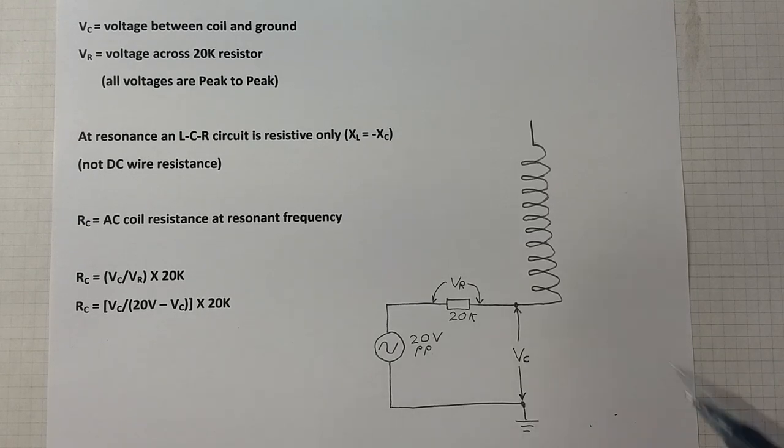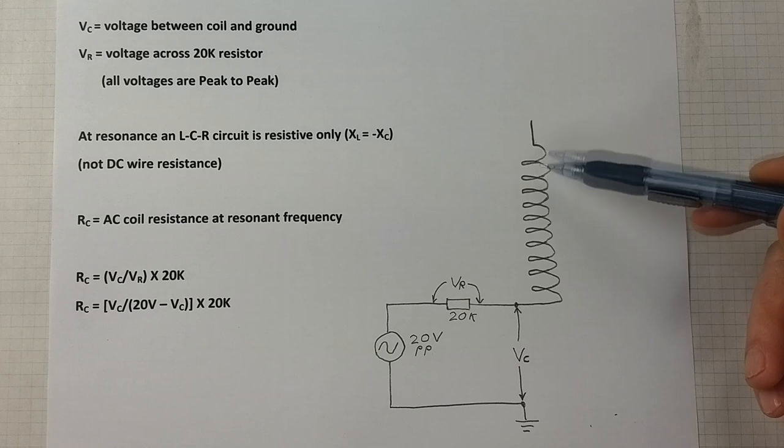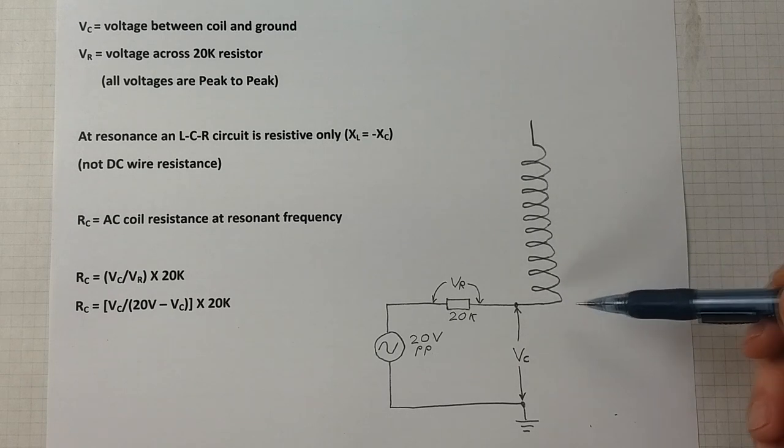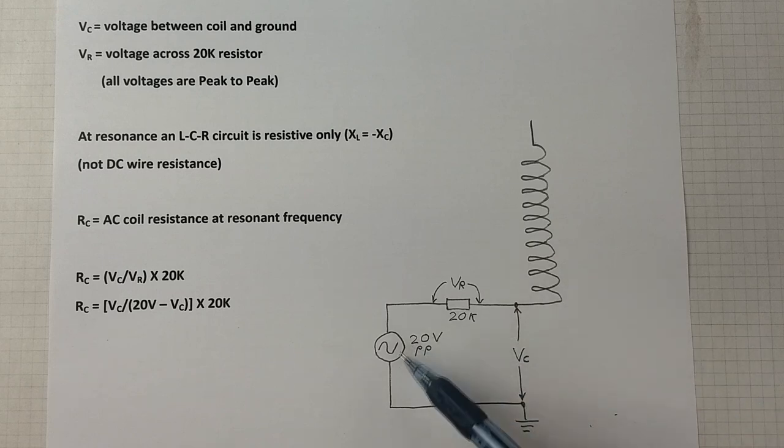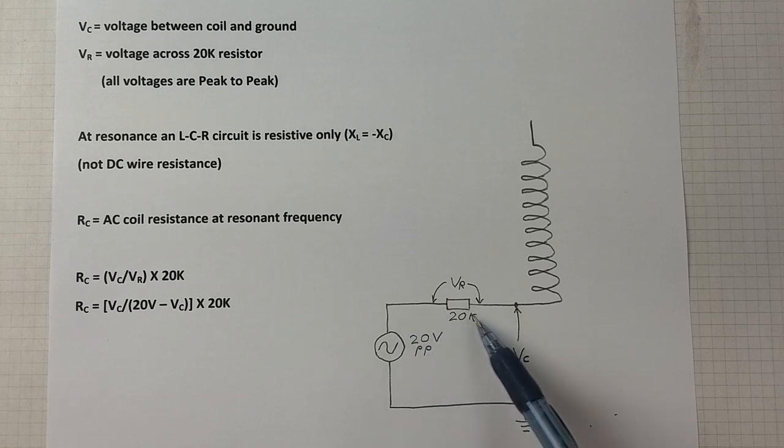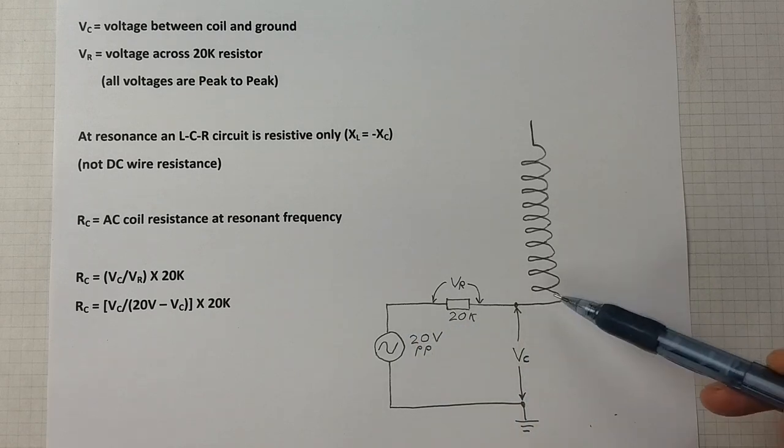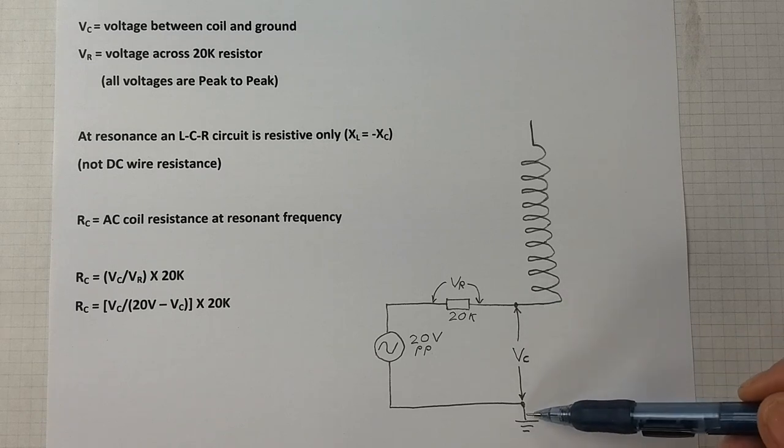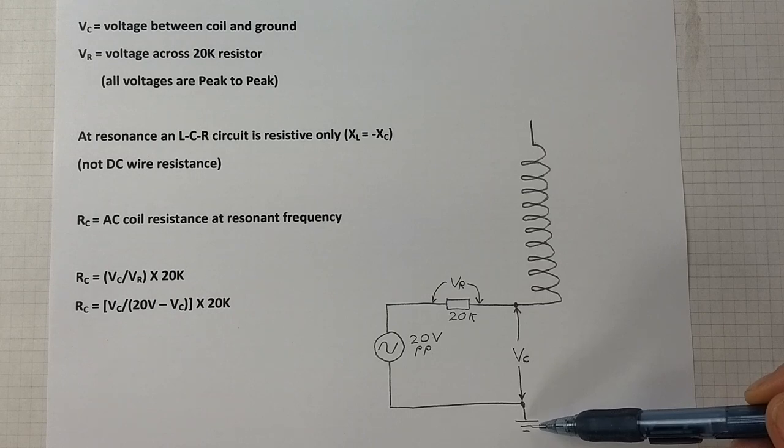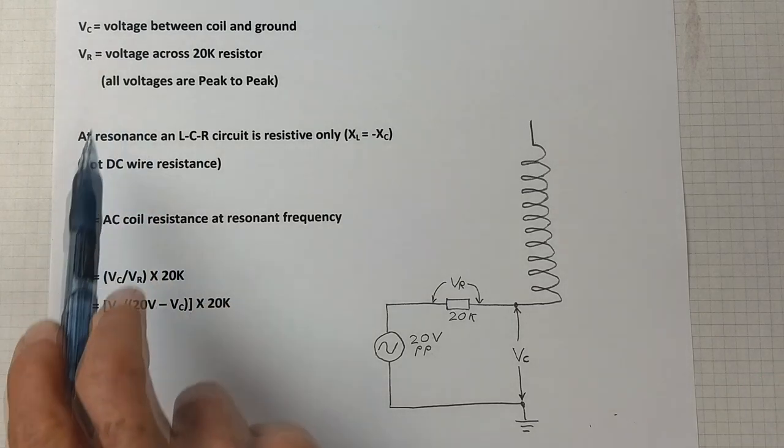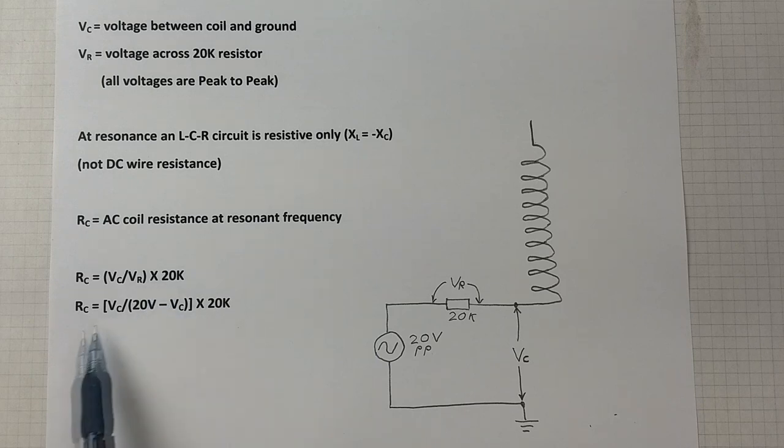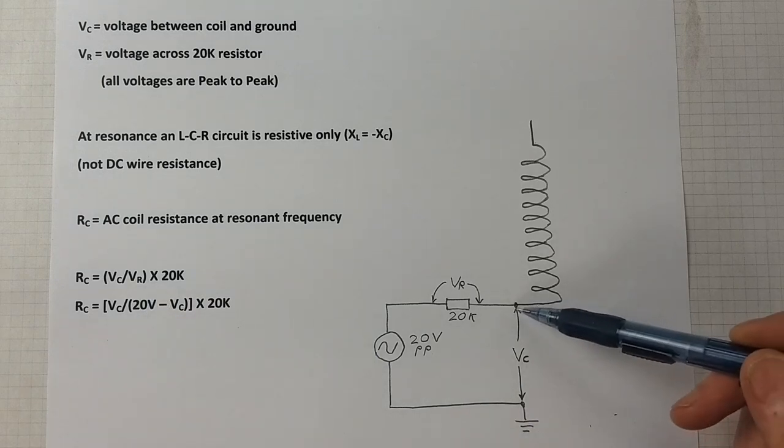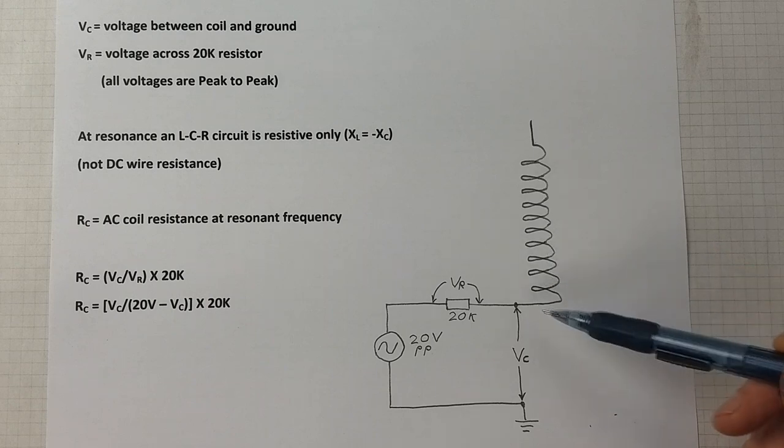Let's investigate the properties of the two Tesla coils. We're going to do that by feeding a function generator through a 20k ohm resistor to the base of the coil. Then with an oscilloscope, we'll look at the voltage between the base of the coil and ground.